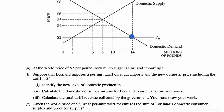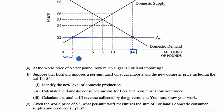The domestic demand at the world price is where the two lines intersect, which is 14 million pounds. You might be tempted to put 14 million pounds as the answer, but that is the total domestic demand — some is domestically produced and some is imported. At a price of $2, domestic producers are willing to produce 2 million of those 14 million pounds. So the imports are the gap: 14 minus 2 equals 12 million pounds imported.